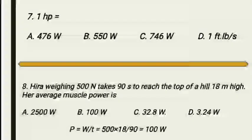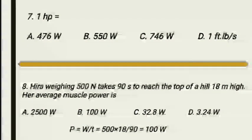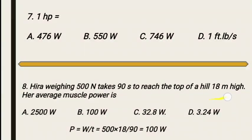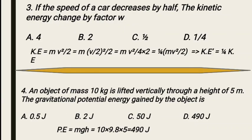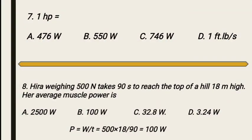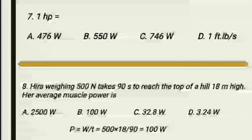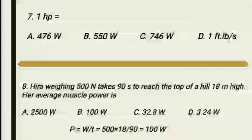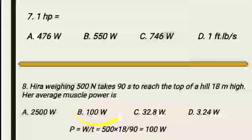W equals F times d: 500 times 18 equals 9000 joules. Time is 90 seconds. Power equals 9000 divided by 90, which equals 100 watts. The power is 100 watts.